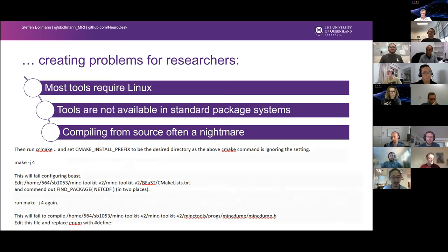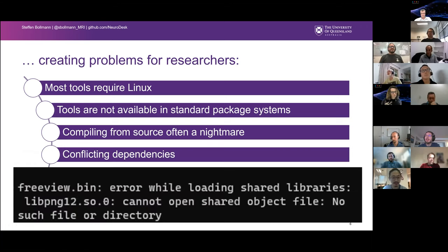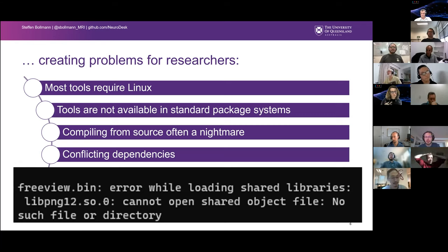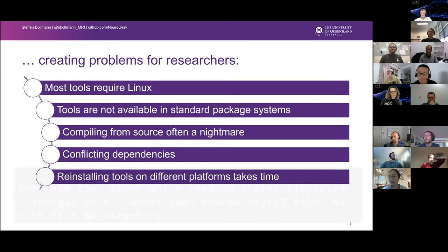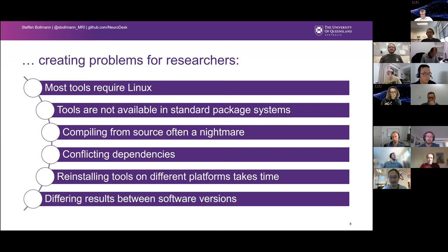And when you've got it working, the problem is that scientists are not software developers — they're not updating their libraries. What can happen is your scientific software needs a very specific library, and when the operating system updates, that library disappears. For example, libpng12 got removed from current packages and you can't run our software anymore. Then it takes a long time to reinstall all tools on a new computer, and in the end it's not reproducible. We get different results between different software versions, which is really annoying for researchers.